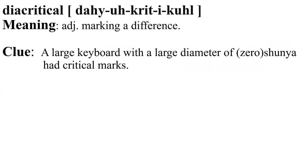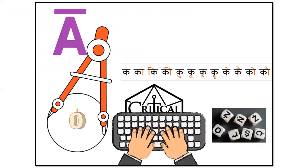Diacritical — meaning marking a difference. Clue: critical diameter of zero on a keyboard. Visualize a large keyboard with a large diameter of zero (Shunya), and it had critical marks.